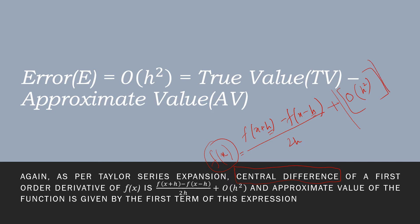The error E is equal to the true value of the solution minus the approximate value of the solution. This is your error, and this equals a function of the step size. This is what we refer to as the order of the difference.